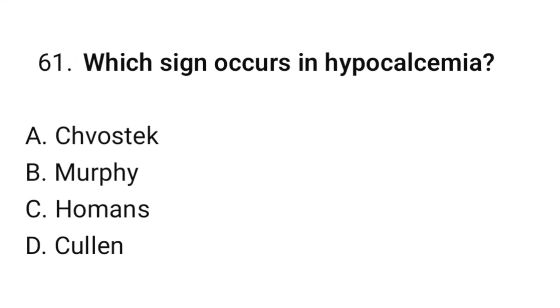Question number sixty-one: Which sign occurs in hypoglycemia? The correct option is A: Chvostek's sign.